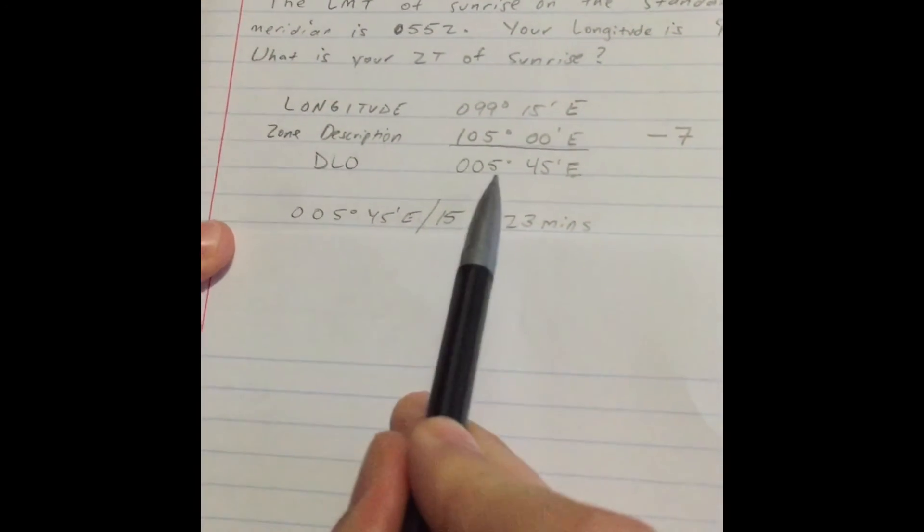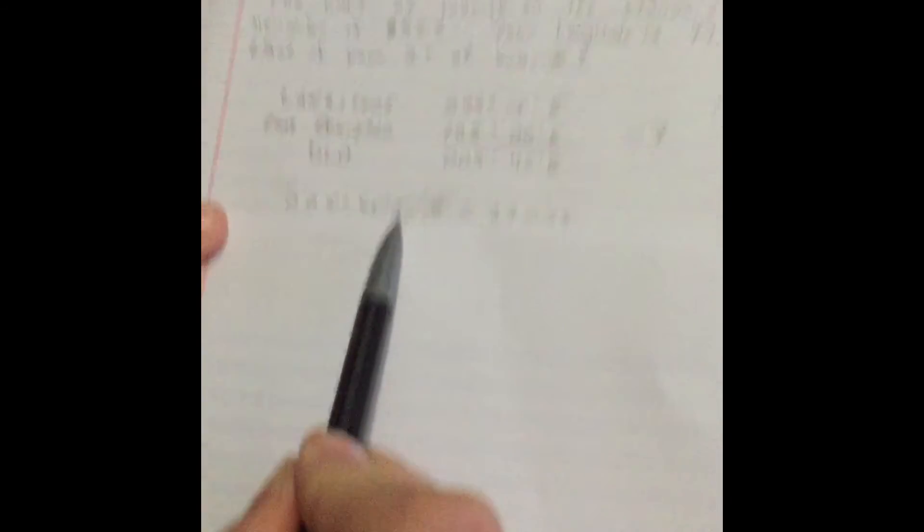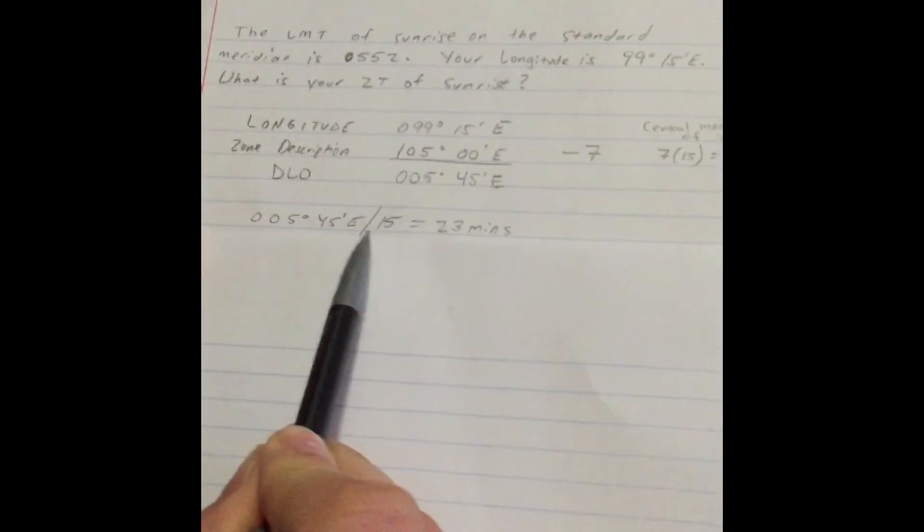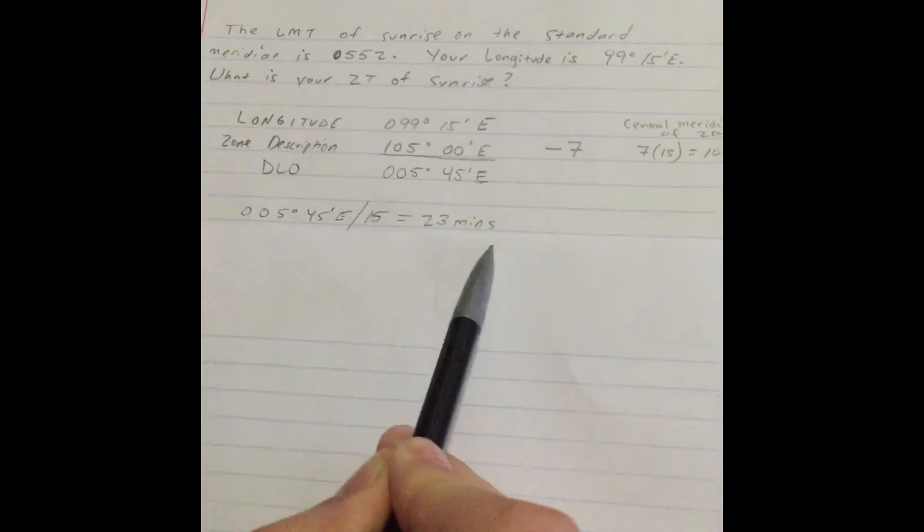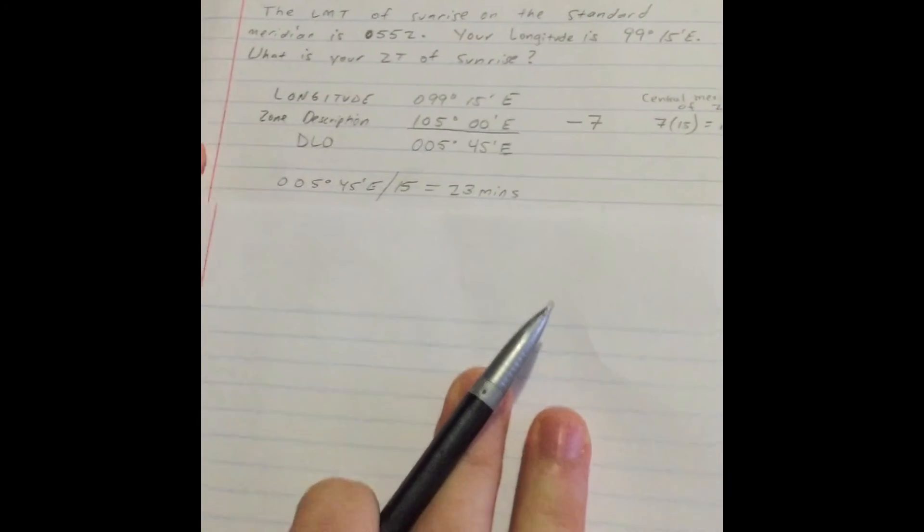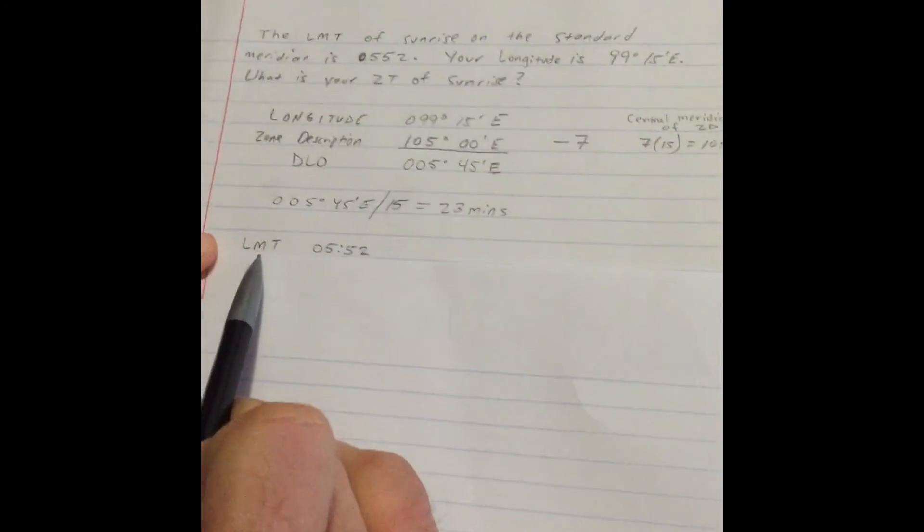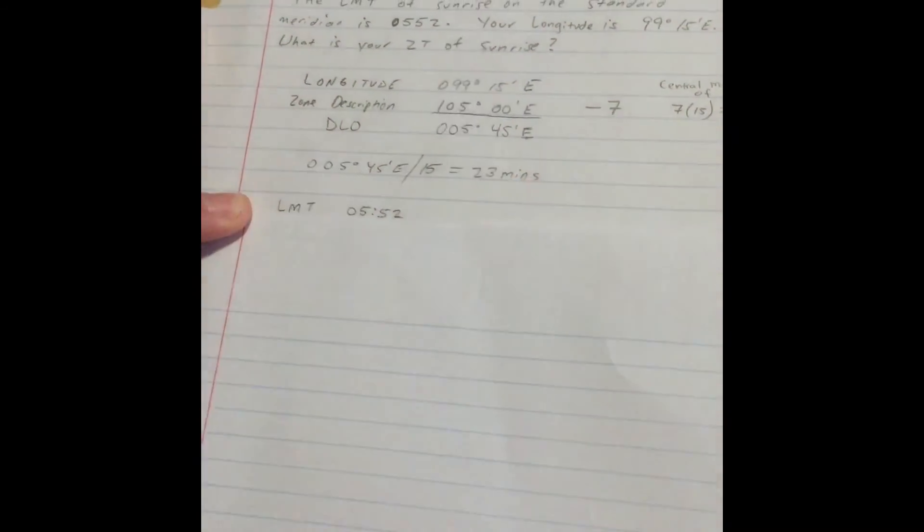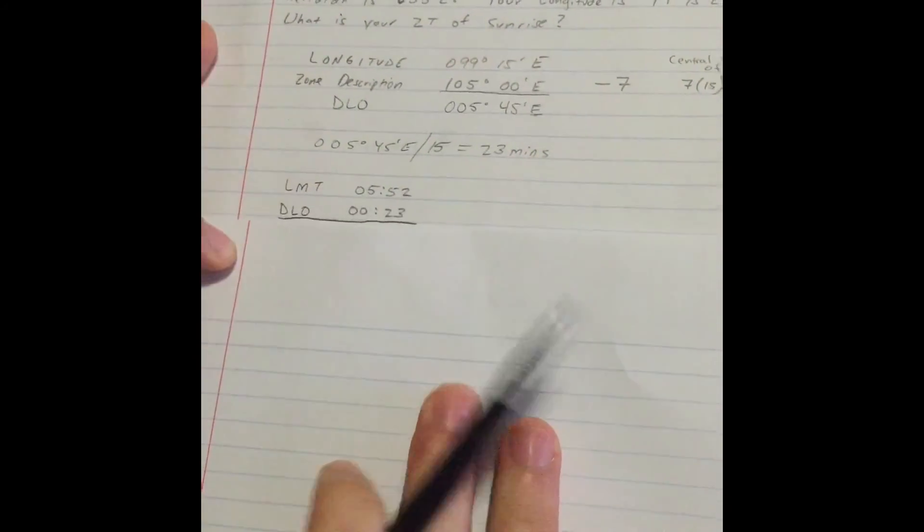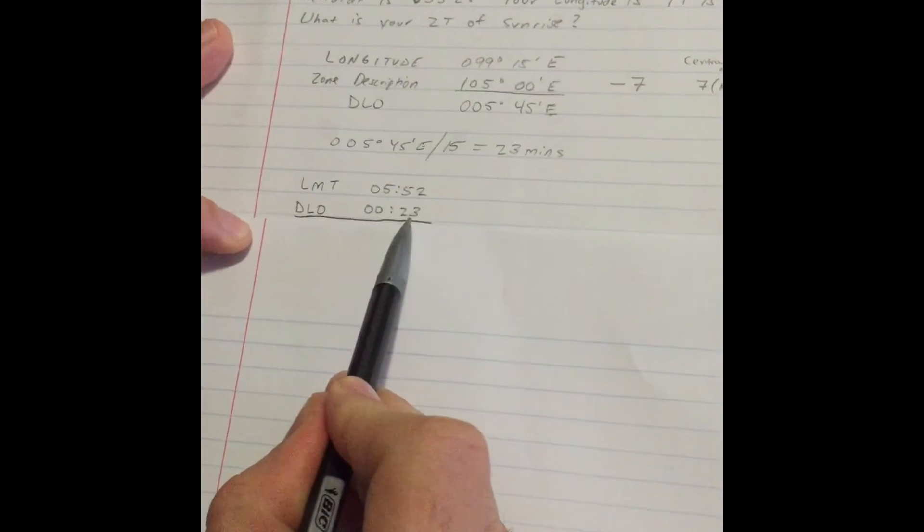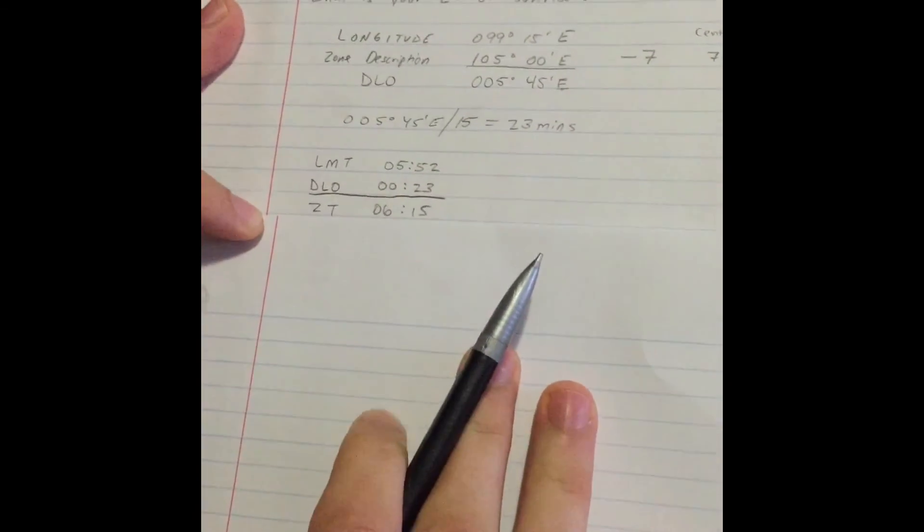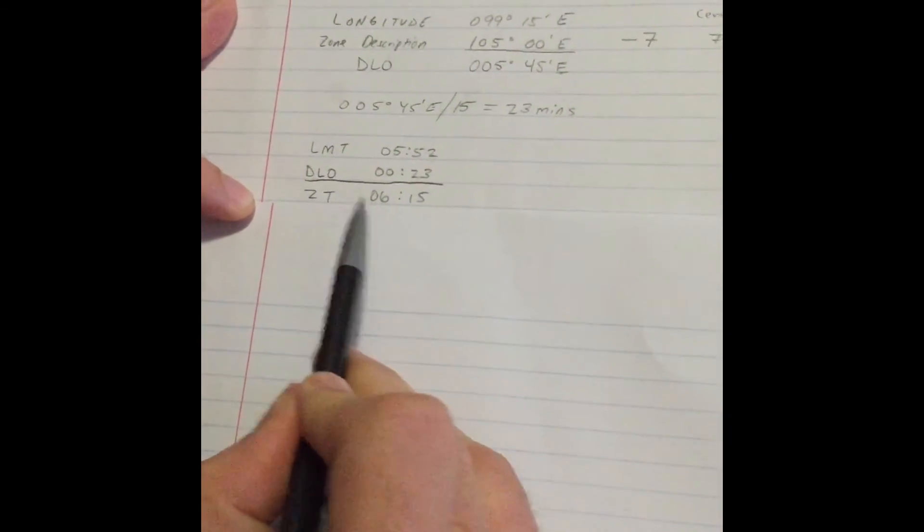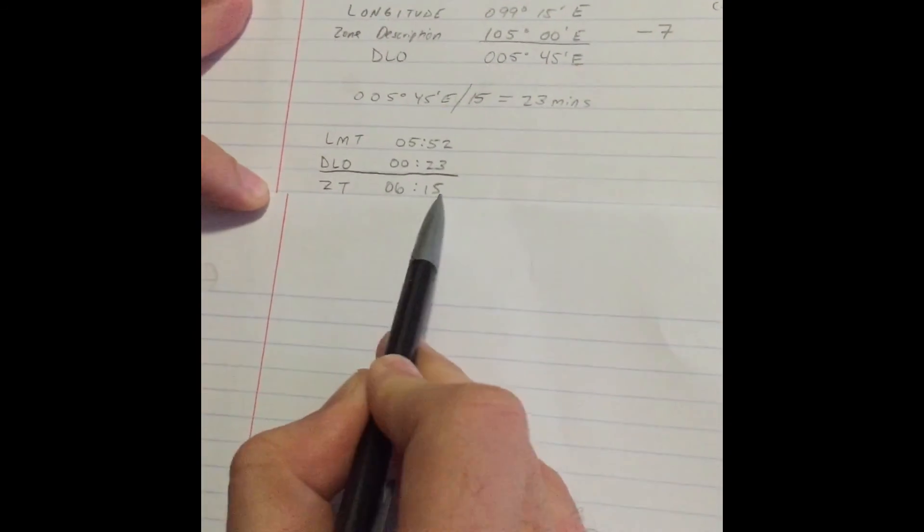By taking the DLO and converting to time, which is dividing by 15, we get 23 minutes. Again, we're going to take the given local mean time as stated above, 0552, and we're going to add our DLO, which is 23 minutes, which gives us a zone time of 0615.